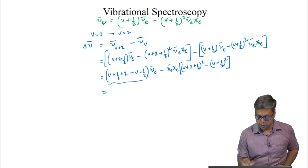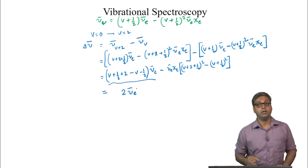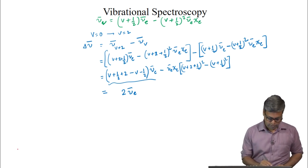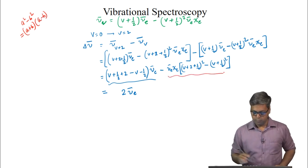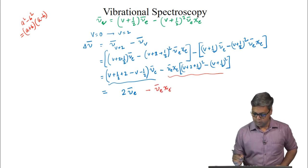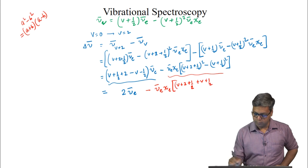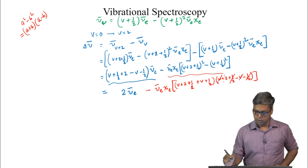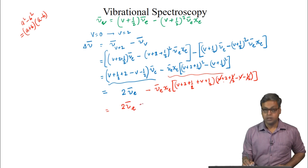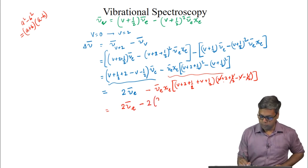The first term gives us 2 nu-bar_E. For the second term, using a² minus b² equals (a+b)(a-b), we write minus nu-bar_E chi_E times [(V+2+1/2) + (V+1/2)] times [(V+2+1/2) minus (V+1/2)]. The second factor simplifies to 2, giving us: 2 nu-bar_E minus 2(2V+3) nu-bar_E chi_E.